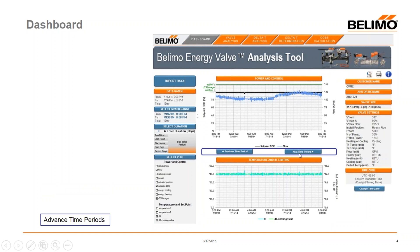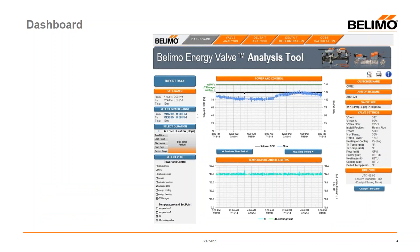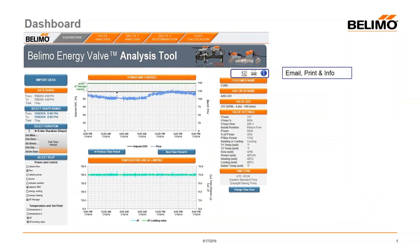You also have the ability to advance either forward or backwards through the screens using time limiters to go forward or backward in time to see what the valve is doing. Over on the right-hand side there are three buttons: the first allows you to email a copy of the screen to someone; you can also print a copy; and the eye icon gives you the version information and system requirements that the tool needs.